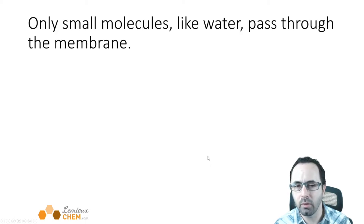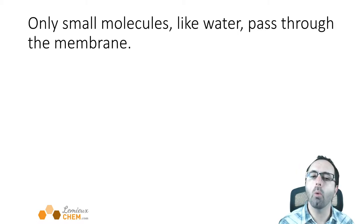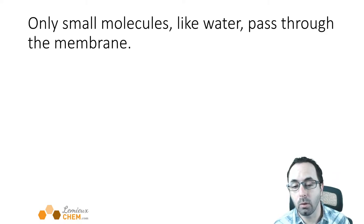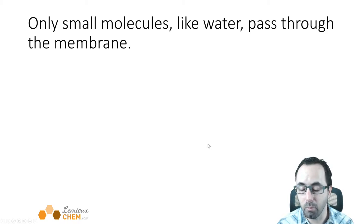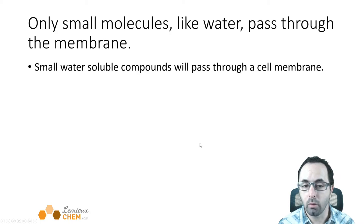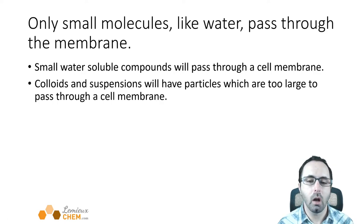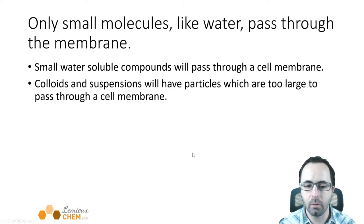Reverse osmosis means we push against that natural passage of solvent from more dilute to more concentrated, actually making the water more dilute by taking out the dissolved things we don't want. Osmosis only occurs for very small water-soluble molecules and water itself. Large molecules cannot pass through the membrane — only water and maybe some small other molecules. Small water-soluble molecules pass through the cell membrane, but colloid and suspension particles are too large — protein particles, starch particles, large biomolecules will not pass through.